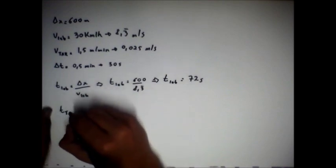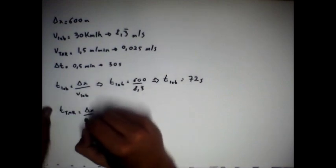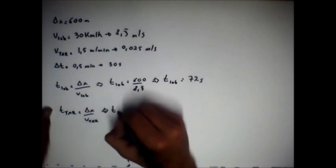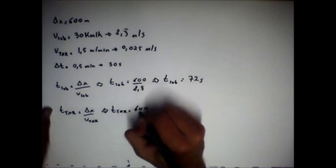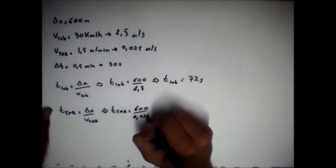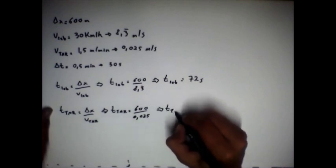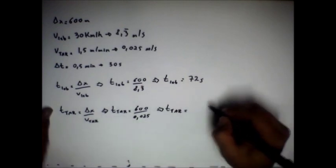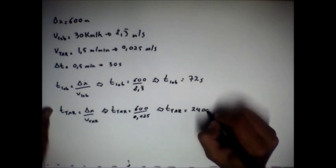E o tempo da tartaruga é delta x sobre a velocidade da tartaruga. Então, o tempo da tartaruga vai ser 600 sobre 0,025. Então, o tempo da tartaruga vai ser 24 mil segundos.